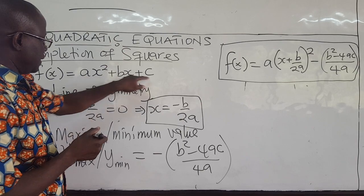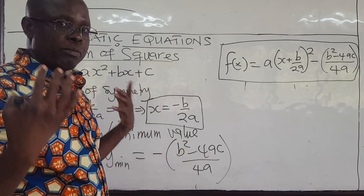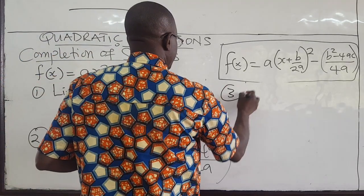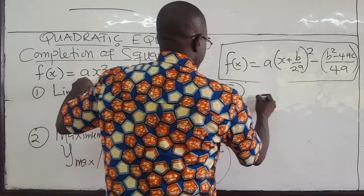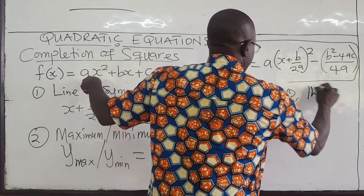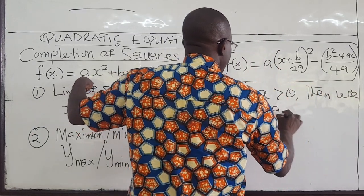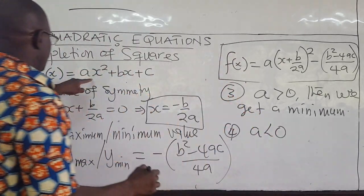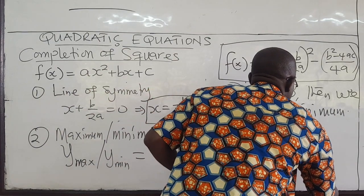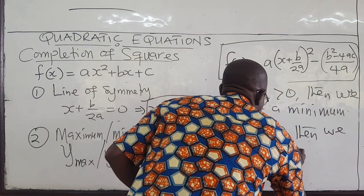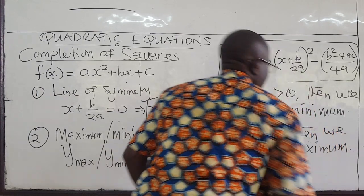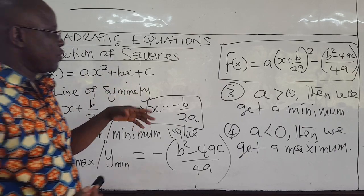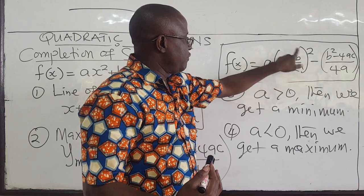If I know a, b, and c and compute that expression, it gives the maximum or minimum. How do we know whether we have a maximum or minimum? If a is positive, then we get a minimum. If the coefficient a is negative, then we get a maximum. These are important pieces of information you can get from completing the square.